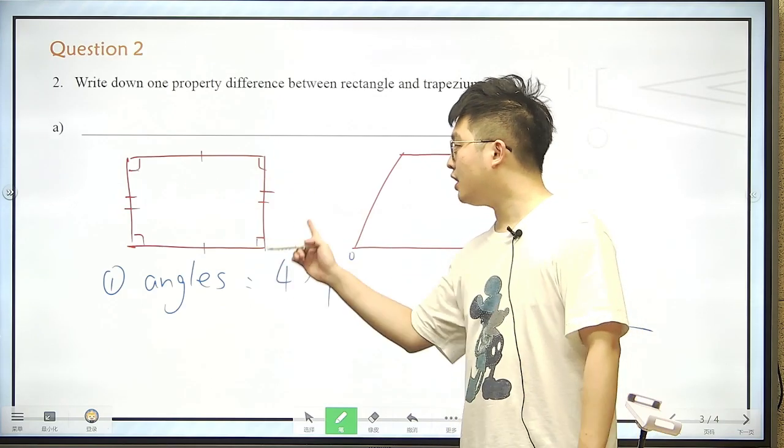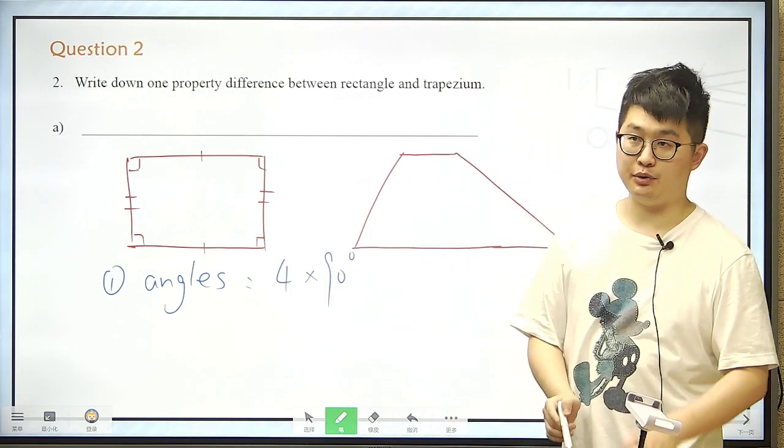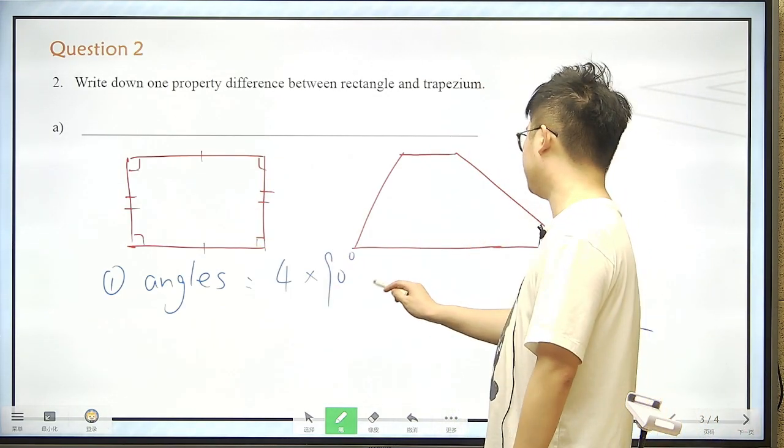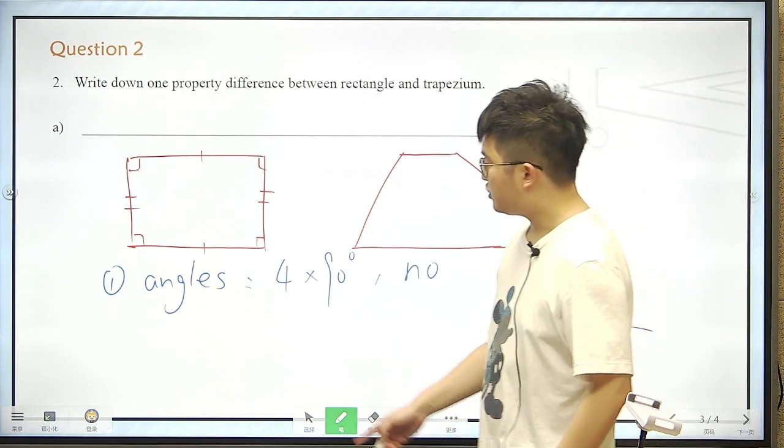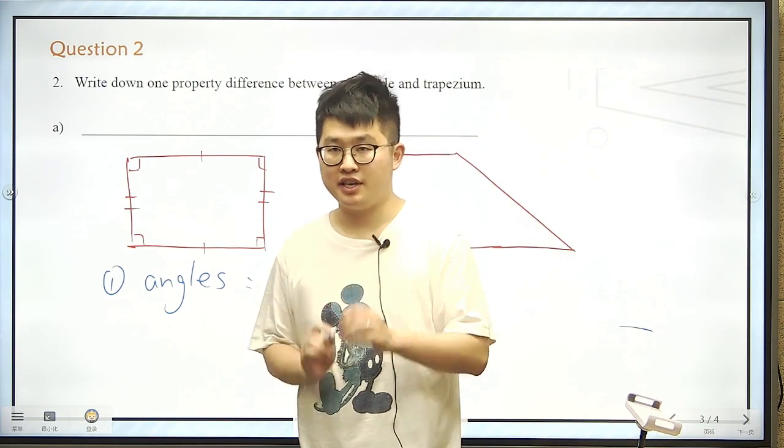Which means the four angles are all 90 degrees. But trapezium, just no. Trapezium, no. So the first difference would be about the angles.